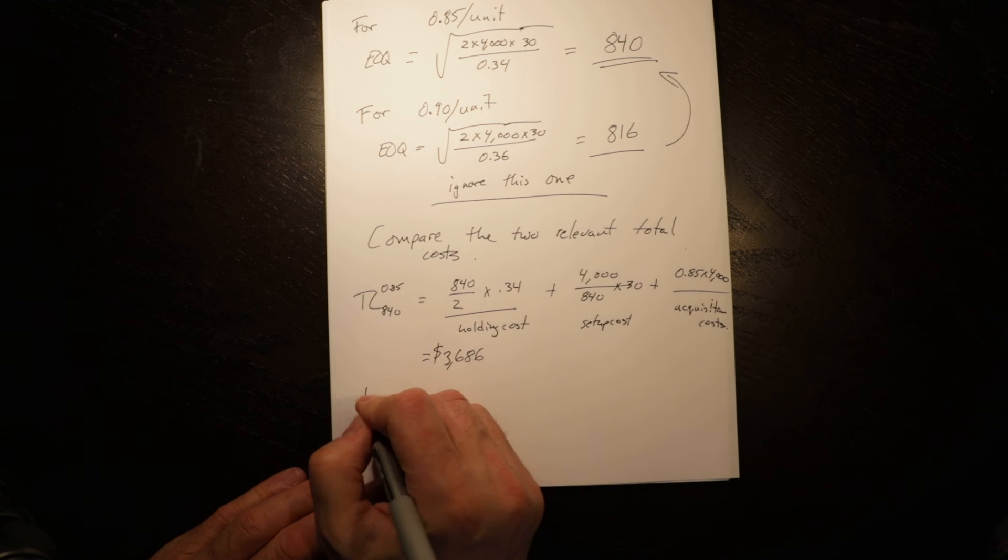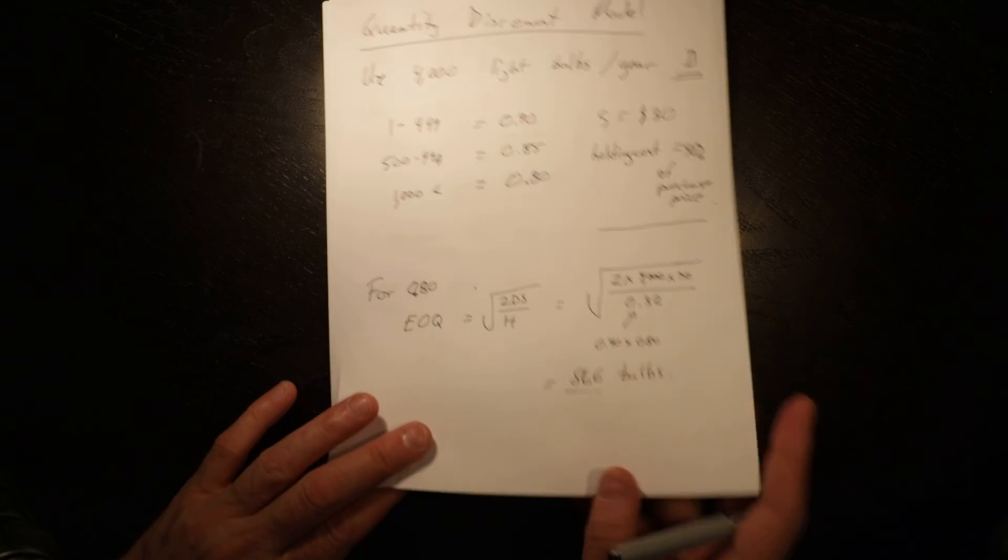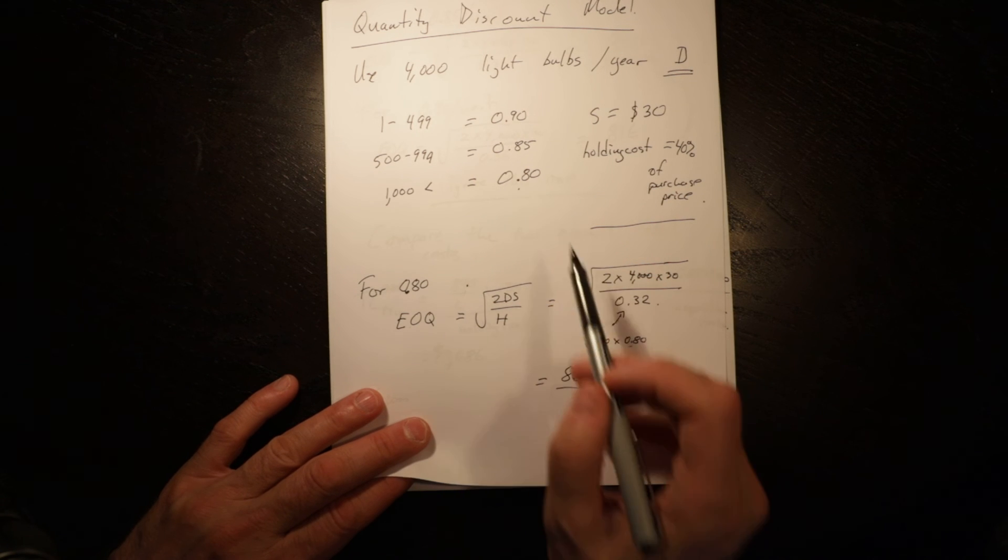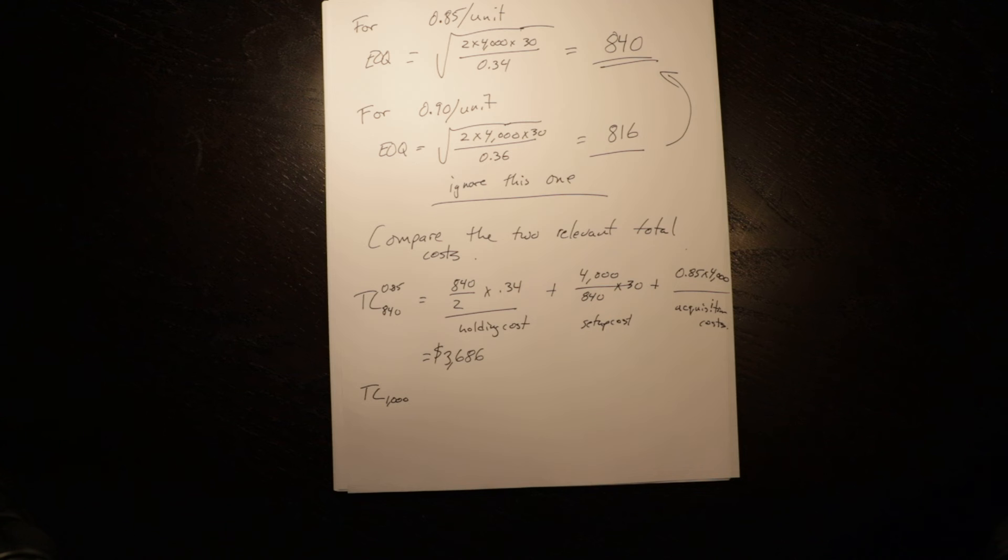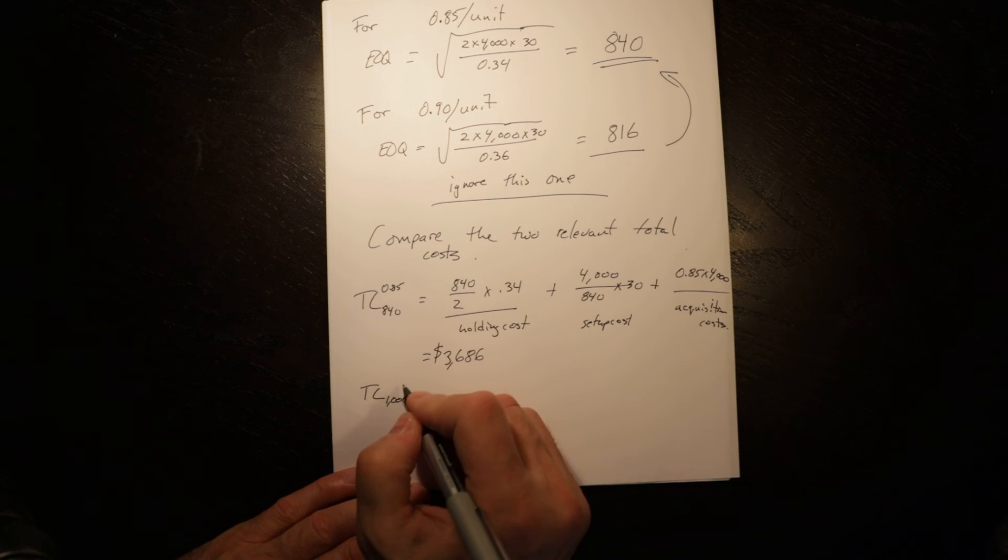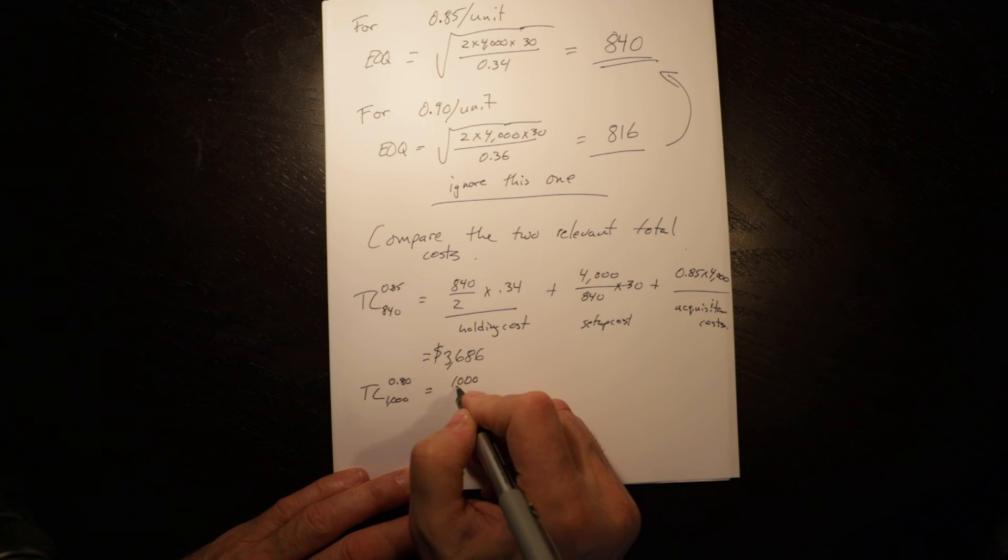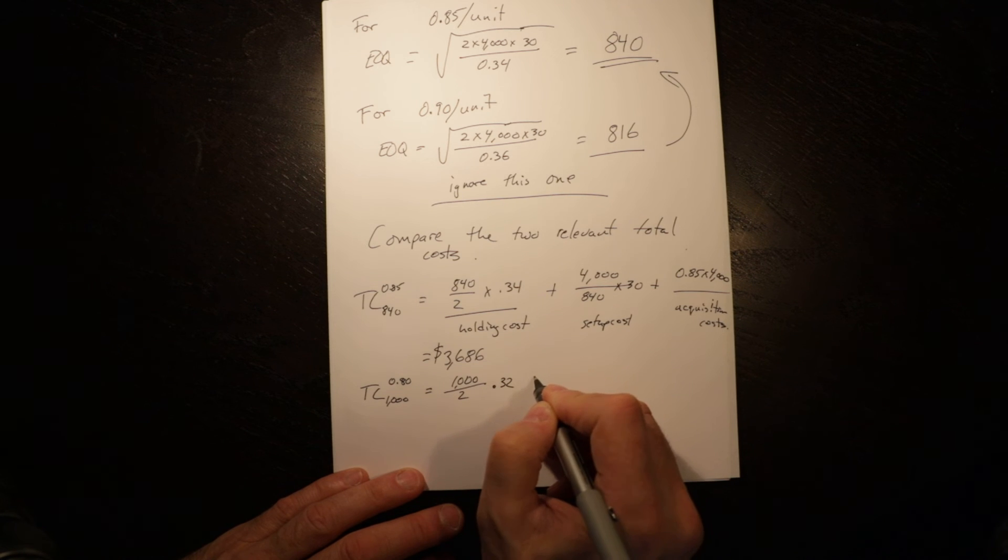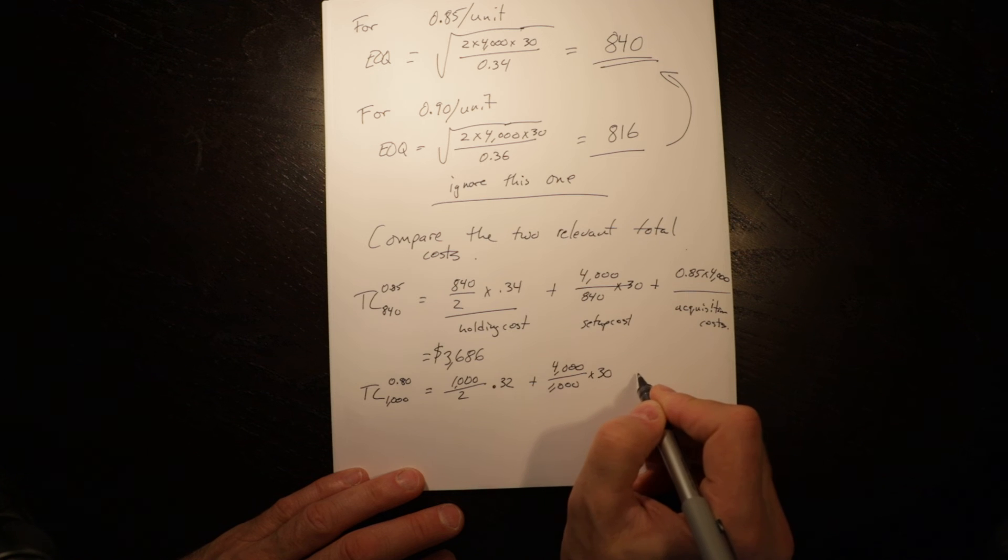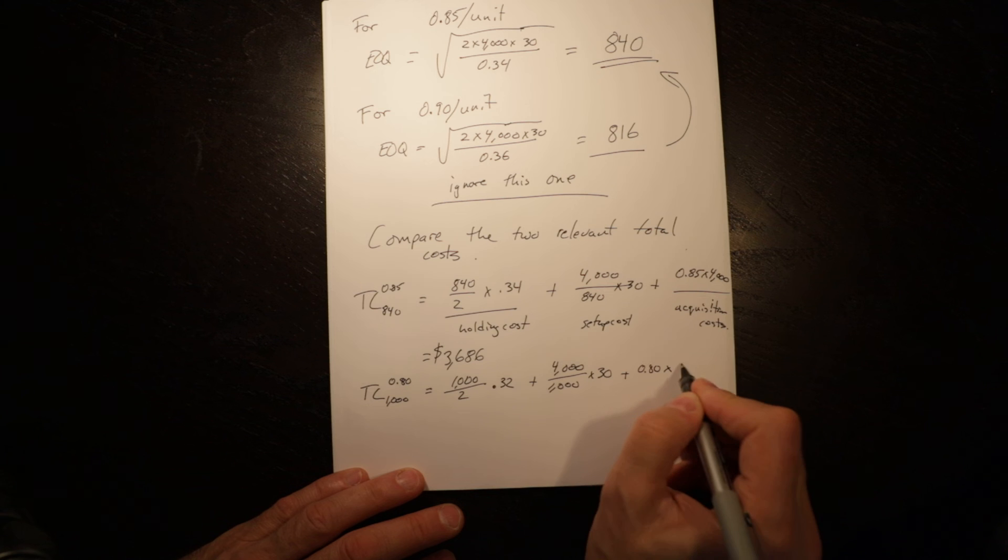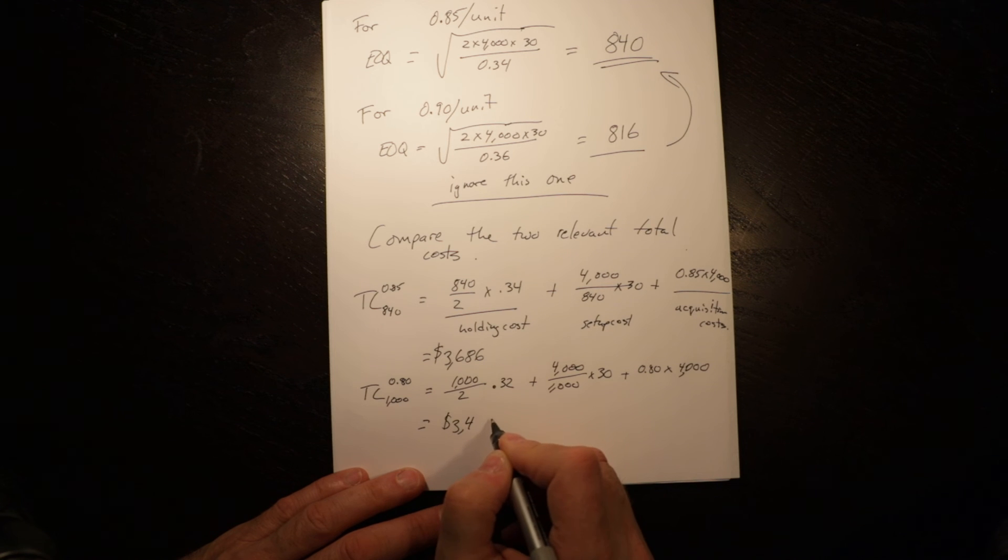If we compare that to the total cost at a thousand—because for this quantity we had to order at least a thousand to get the 80 cent price—that equals a thousand divided by 2 times 0.32, plus 4,000 divided by a thousand times 30, which is the setup cost, plus 0.80 times 4,000, which is our acquisition costs. This equals $3,480.